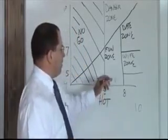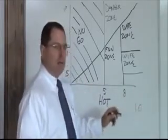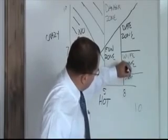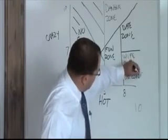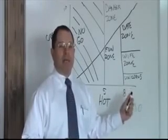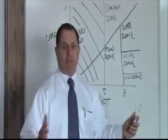Now, below a five crazy and above an eight hot, this is your unicorn zone. These things don't exist. If you find a unicorn, please capture it safely. Keep it alive. We'd like to study it and maybe look at how to replicate that.